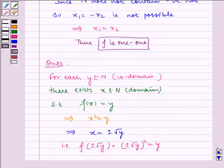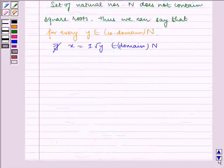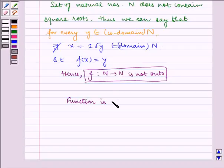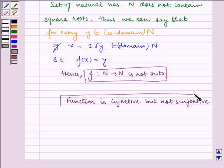Now, since the function f is one-one and f is not onto, therefore function is injective but not surjective. I hope you understood the problem, bye and have a nice day.